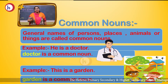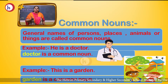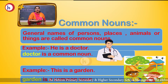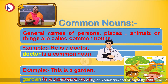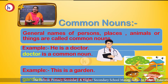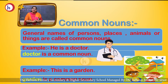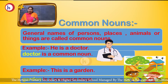Let's take some examples. Doctor and teacher — they are common names of a person. If we say park, that is a common name of place. Look at the picture: he is a doctor. In this sentence, 'doctor' is a common noun. This is a garden or park — garden or park is a common noun; it is a name of place. So common, general names are called common nouns.